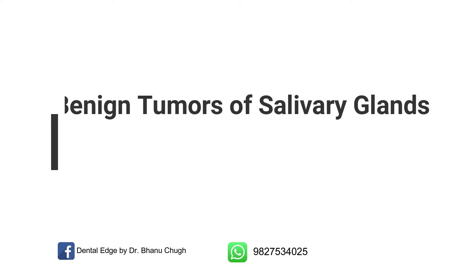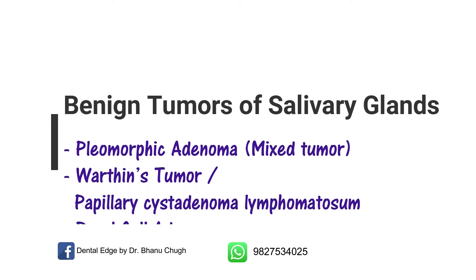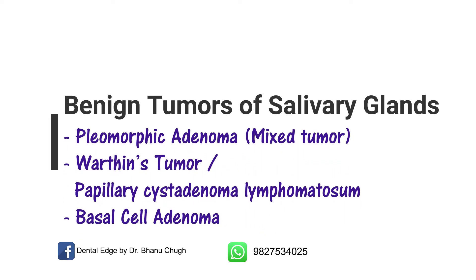From the benign tumors of salivary glands, the important topics are pleomorphic adenoma or mixed tumor — it is a very commonly asked question. Then Warthin's tumor, also a very important topic. Its other name is papillary cystadenoma lymphomatosum, and there is usually a question on why it is called so. Basal cell adenoma is not that commonly asked but you should at least read this topic.